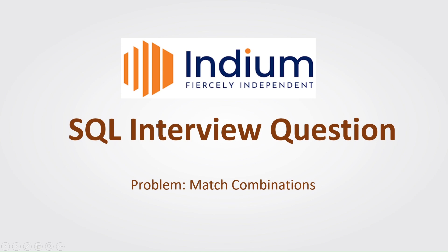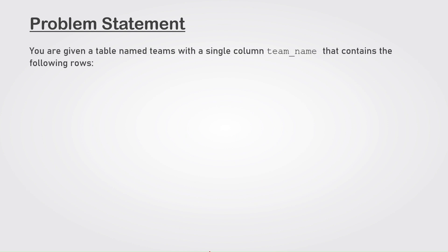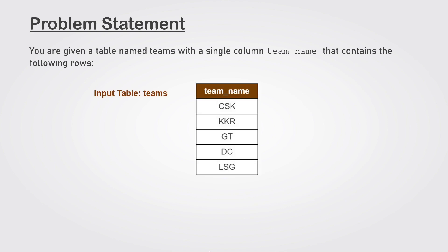Hi everyone, welcome back to my channel. Today we are going to solve a very interesting and important SQL interview question that was asked by Indium Software. The question is about finding possible cricket match combinations. You are given a table named Teams with a single column team_name that contains the following rows: CSK, KKR, GT, DC, and LSG.